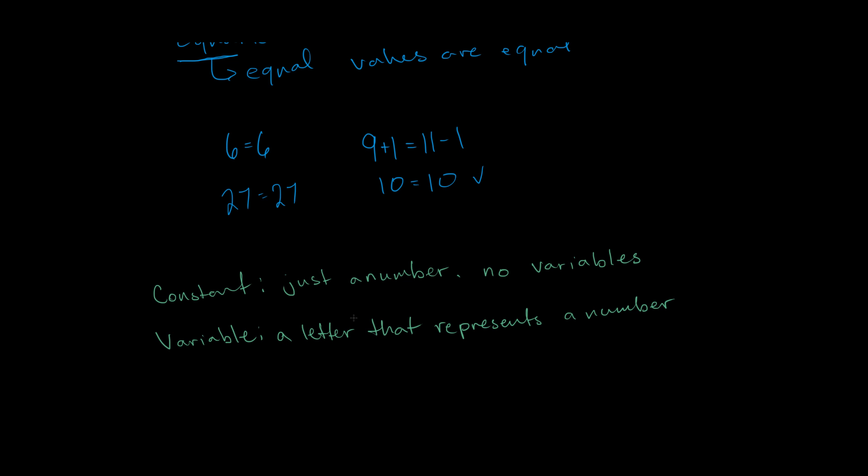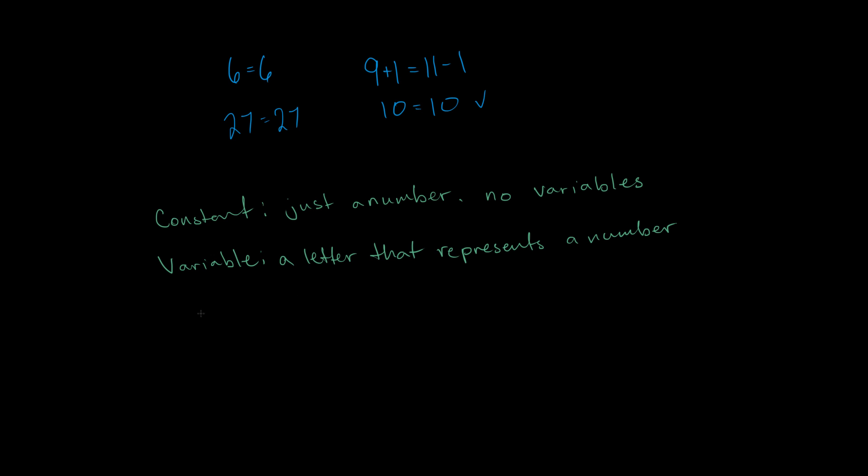What if I wanted to multiply my variable x by 3, for example? Well, you might be tempted to call 3 a constant then, but you have to remember that constants can't associate with variables. So instead, we have to call that a coefficient, and the coefficient, like I just said, is a number that multiplies a variable.